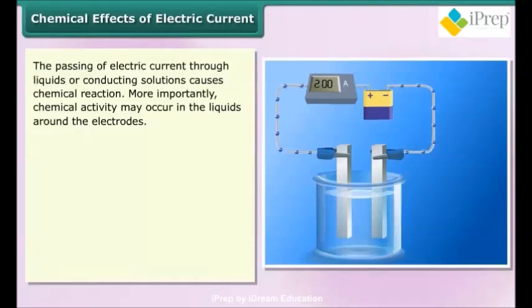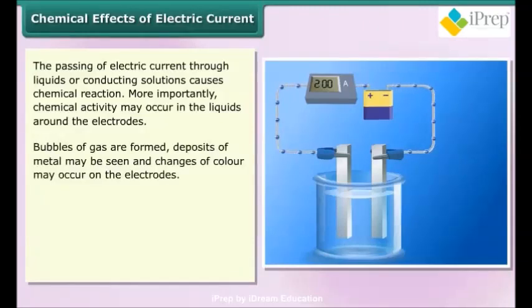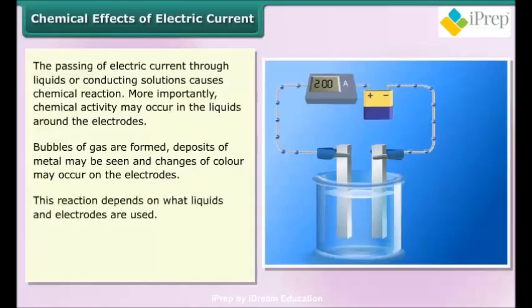Chemical activity may occur in the liquids around the electrodes: bubbles of gas are formed, deposits of metal may be seen, and changes of color may occur on the electrodes. This reaction depends on what liquids and electrodes are used.